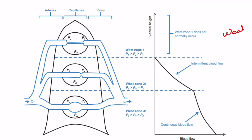J.B. West built on a gravitational model of ventilation and perfusion. This assumes that capillary blood flow to the alveolus is dependent on the pressure of the gas within the alveolus. In the upright position, ventilation and perfusion both increase from the top to the bottom of the lung, attributed to the effect of gravity.